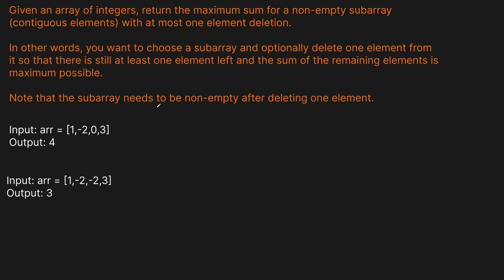We've already solved the maximum subarray problem on this channel, so hopefully this isn't too much of an extension. Looking at the example input [1, -2, 0, 3]: summing the entire array gives 1 + (-2) + 0 + 3 = 2. Obviously we want to delete the negative element, which is -2, and the sum becomes 4. We use our one deletion on the negative.